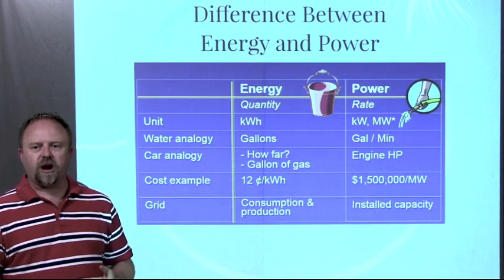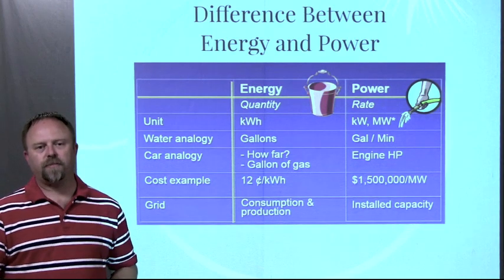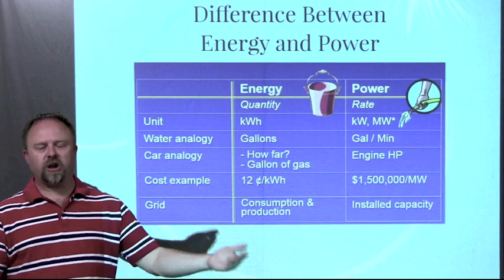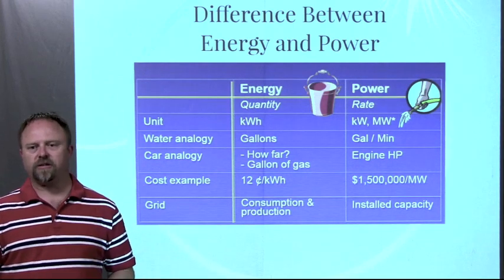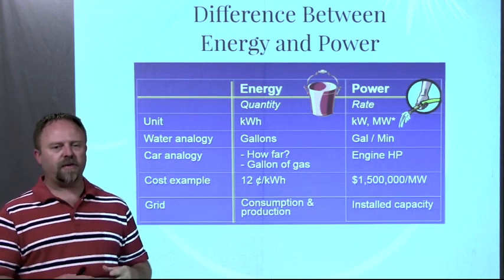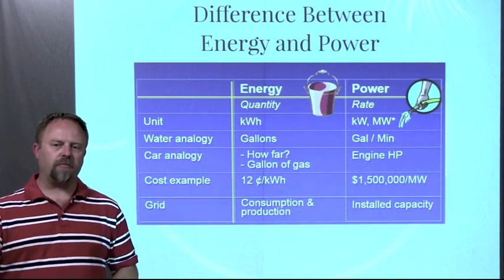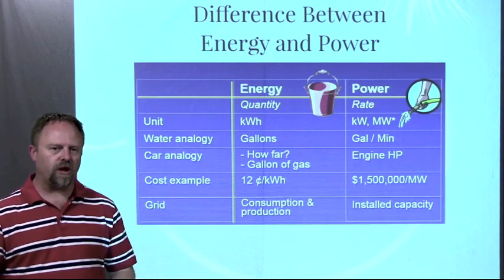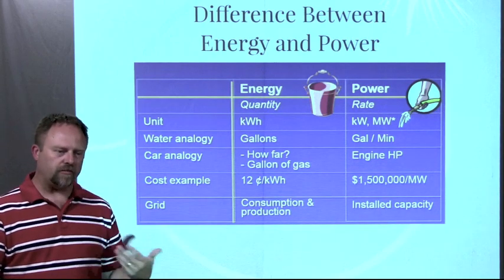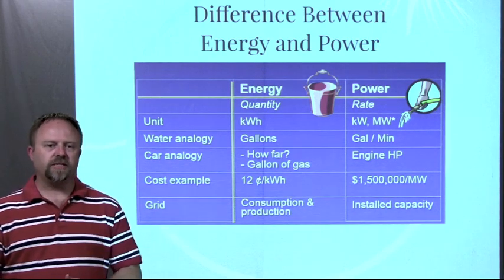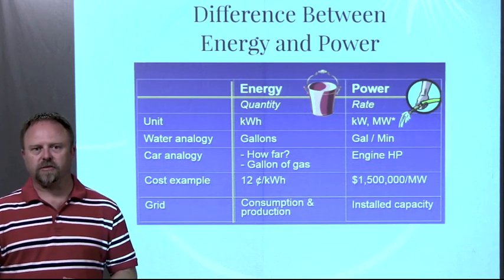Another example would be maybe with a car. The engine has a certain horsepower, which can provide a certain amount of power to make the car go. How far it goes or how much gas you use to get a certain distance is a measure of energy. So when you're thinking about wind turbines hooked into the energy grid, how many wind turbines and their overall capacity would be a measure of how much power they could generate, whereas how much energy is being used is determined by how much is being consumed by the users.